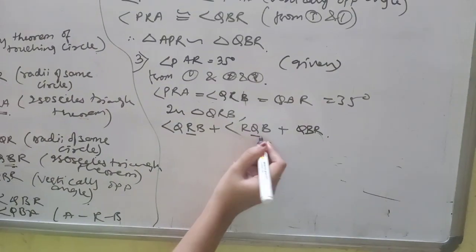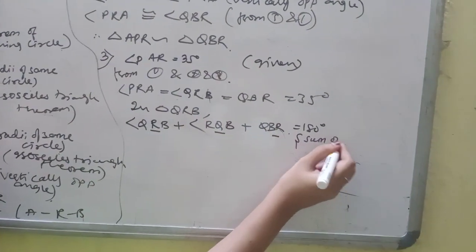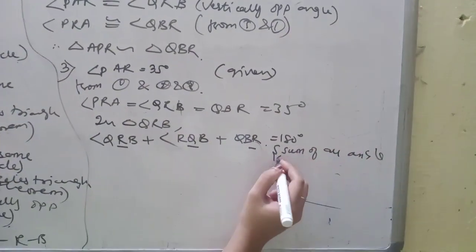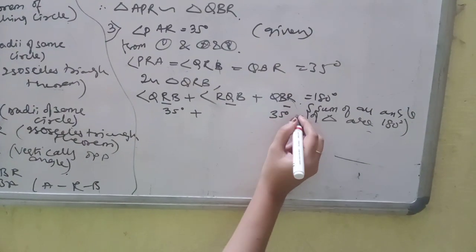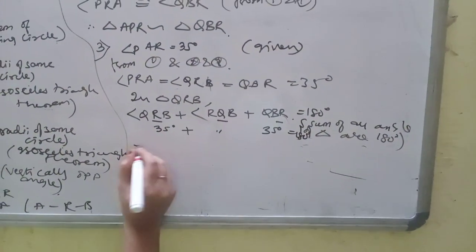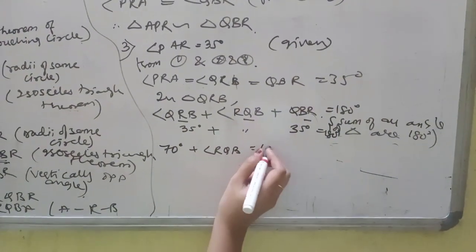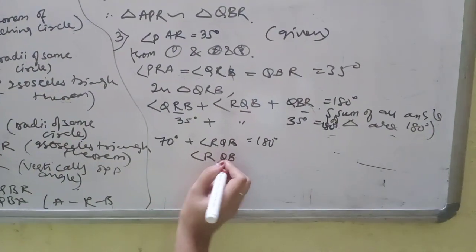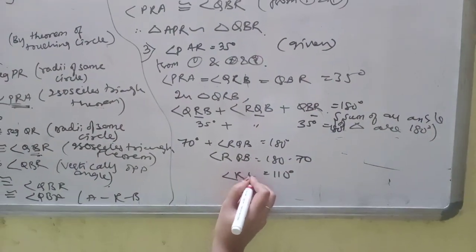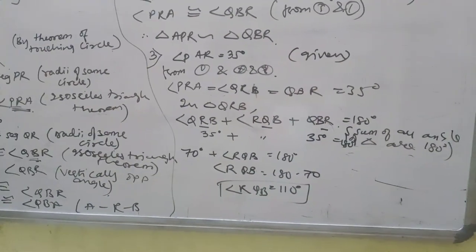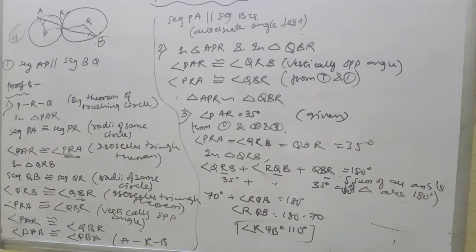Angle PRA congruent to angle QRB. 35 degrees. In triangle QRB we have angle QRB plus angle RQB plus angle QBR equals 180 degrees, sum of all angles of triangle. 35 plus 35 equals 70. Angle RQB is equal to 180 minus 70, which is 110. Angle RQB is equal to 110 degrees.